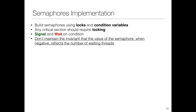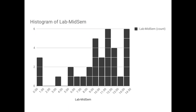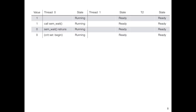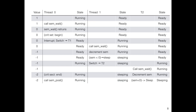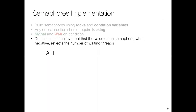Let me run through an example to illustrate this. We also noted that this implementation does not maintain the invariant that the negative semaphore value indicates the number of waiting threads. The textbook says it's easier to implement this way, but I couldn't see why a direct one-to-one mapping would be more complicated.